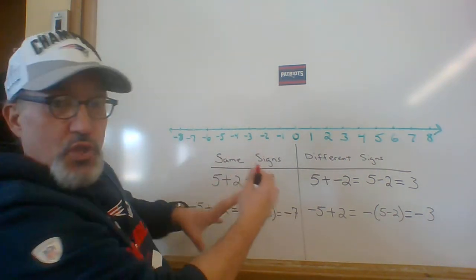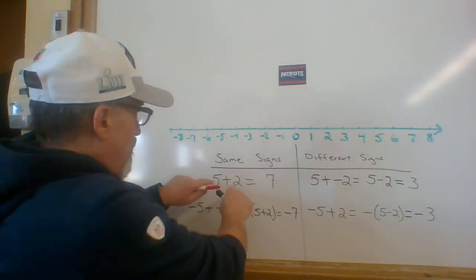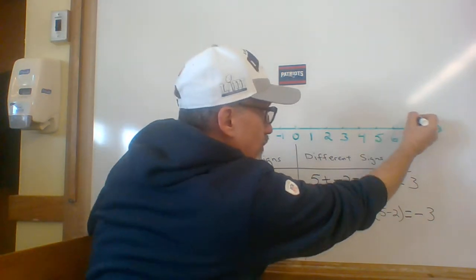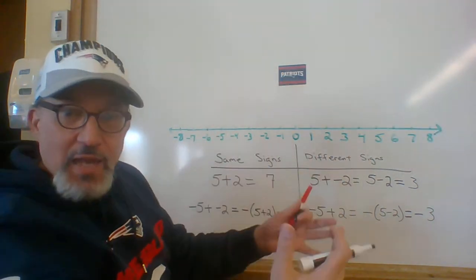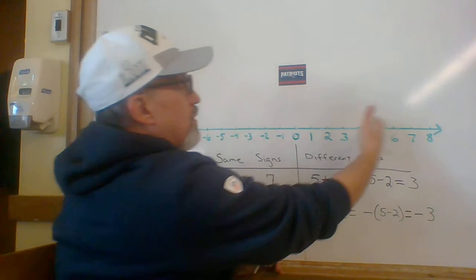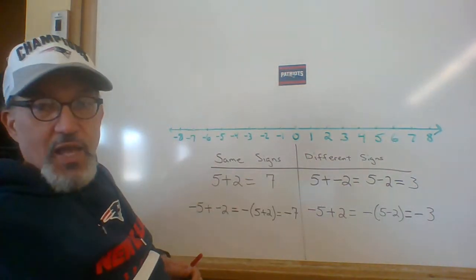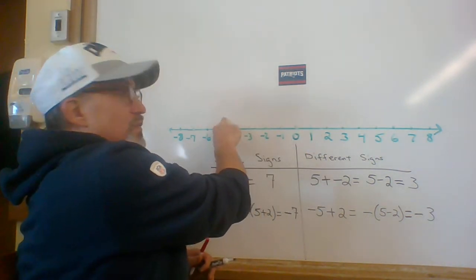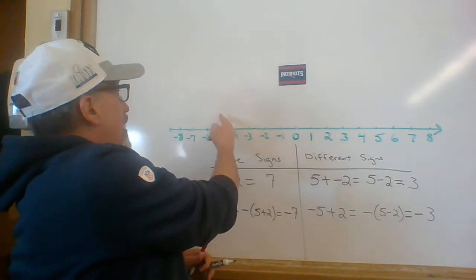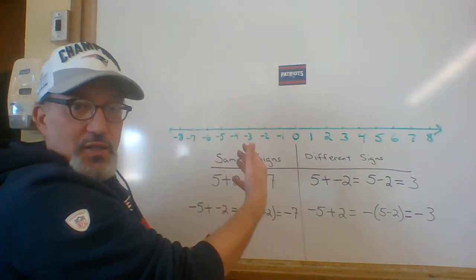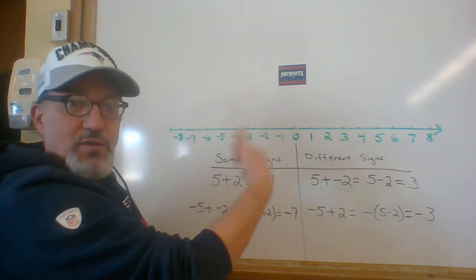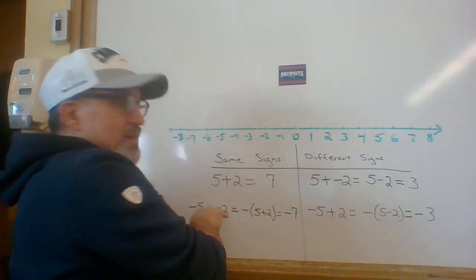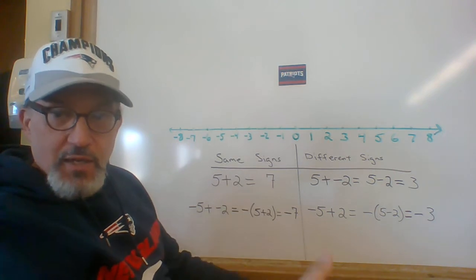Now these rules correspond with what the vectors are doing. When we did 5 plus 2 is 7, we were 5 to the right and then we were 2 more to the right. That's why we added 5 and 2, and of course we ended up at positive 7, the same sign of the original two numbers. With negative 5 plus negative 2, negative 5 is a vector pointing left by 5, the negative 2 goes 2 more to the left. So that's why we added 5 and 2. But of course, we ended up at negative 7 so we took the sign that the two original numbers had: negative.